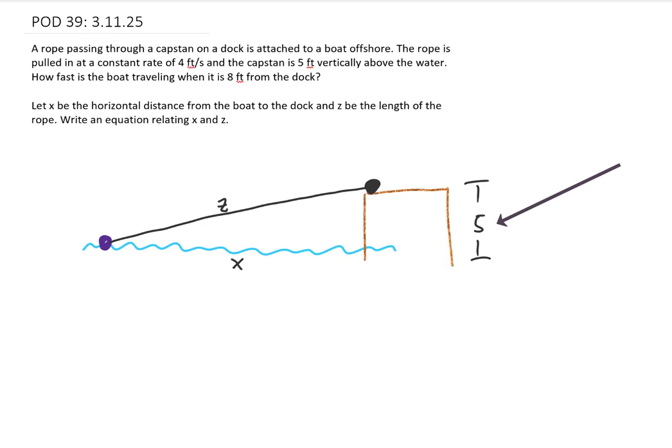We are given a rate in this problem. We are given that the rope is pulled in at a constant rate of 4 feet per second. What that means is that the variable z is being reduced at a rate of 4 feet per second. In terms of derivatives, that means that dz/dt is negative 4.